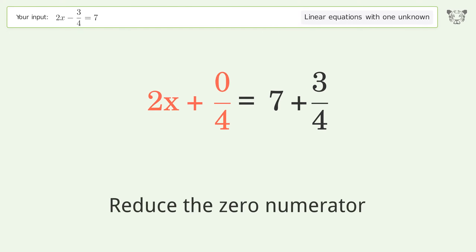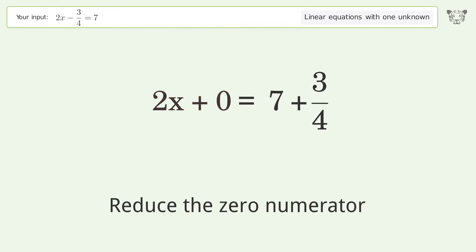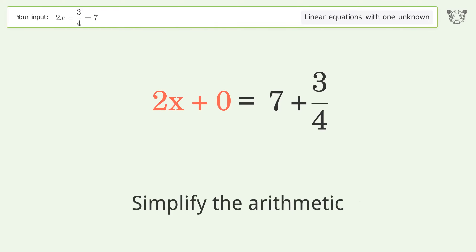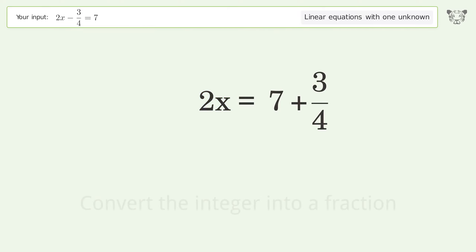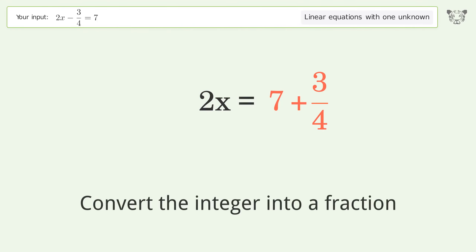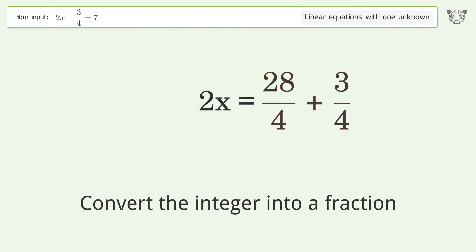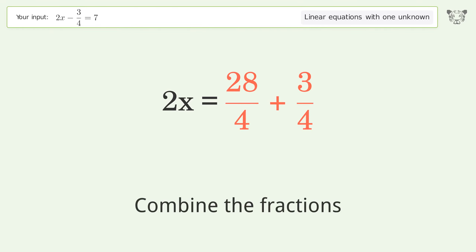Combine the numerators, then reduce the zero numerator. Simplify the arithmetic. Next, convert the integer into a fraction.